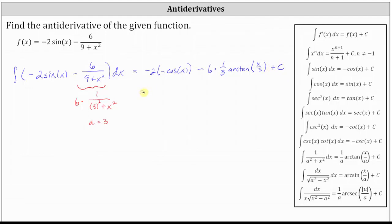Let's go ahead and simplify. We have two cosine x. And then six times one third is two, giving us minus two arctangent of x divided by three plus c.